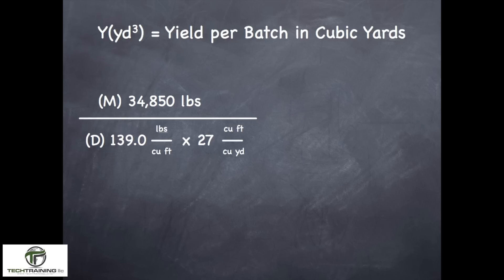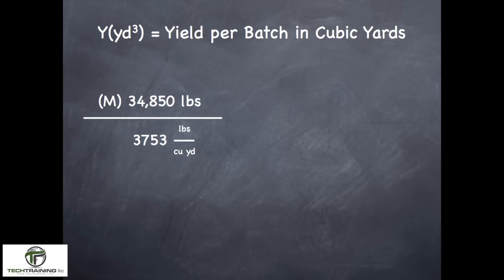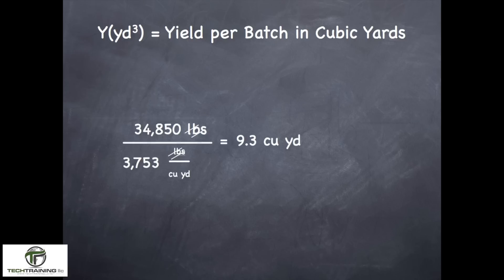If you did not notice it in the cubic feet calculation, you should certainly notice it here: we have over-yielded. To calculate the yield per batch in cubic yards, we take the weight of all the materials batched and divide it by the unit weight times 27 cubic feet per cubic yard. The cubic feet cancel, and if we do the multiplication we get 3,753 pounds of concrete per cubic yard. Doing the division, pounds cancel pounds, and we wind up with 9.3 cubic yards of material — again, slightly over-yielding.